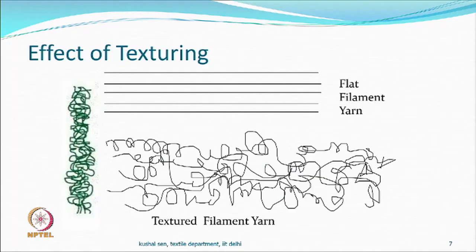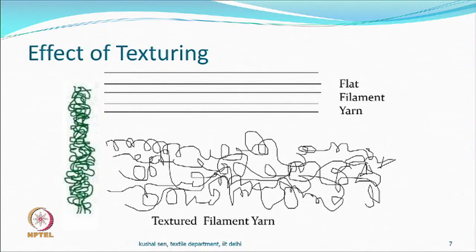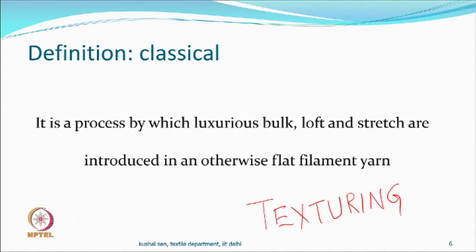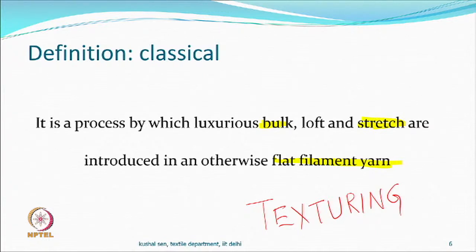So you are looking at something called bulk, something called stretch, and your raw material is flat filament yarn. You want to change the flat filament yarn in some way so that you can get bulk and you can get stretch. Stretch can be obtained only if you have crimps, loops, or crinkles which can be easily opened, and you should do something so that they come back also — if they just extend and do not come back, it is not a good product.